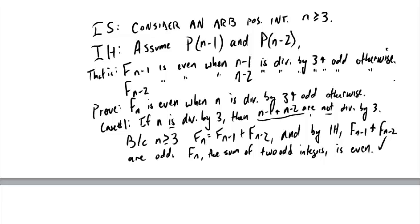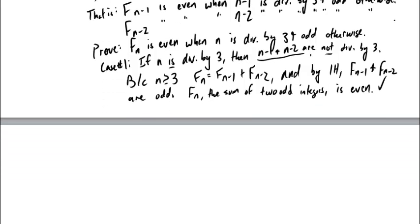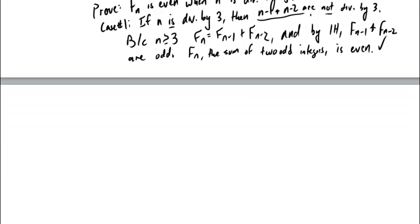The hint says to divide into three cases. Rather than just two cases (divisible by 3 or not), we divide by remainder when divided by 3: remainder 0, remainder 1, or remainder 2. This matters because if the remainder is 1, then n minus 1 is divisible by 3 so F sub n minus 1 is even; if the remainder is 2, then n minus 2 is divisible by 3 so F sub n minus 2 is even.